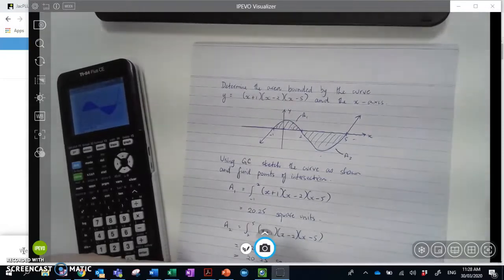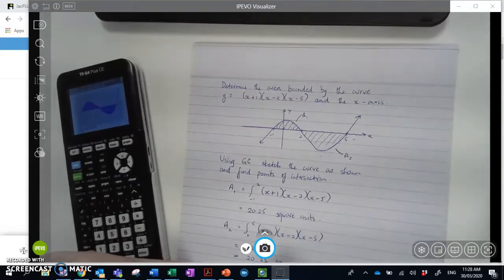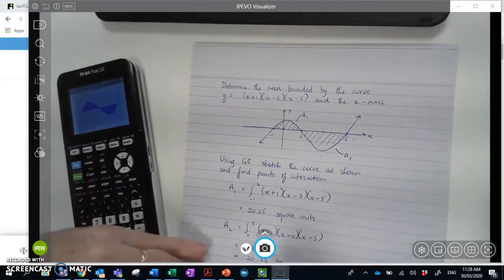And our total area, at, will equal 20.25, our initial area, plus our second area, A2, is 40.50 square units. Okay. And that's done.